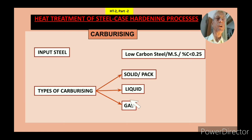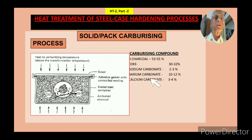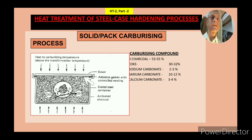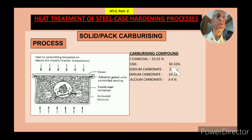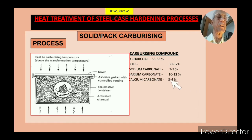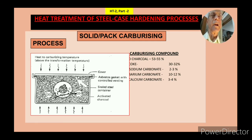In this video I will cover solid or packed carburizing. In this process, there is a steel box or cast iron box covered with a lid. In between, the carburizing compound of the following composition is packed: wood charcoal 52–55%, coke 30–32%, sodium carbonate 2–3%, barium carbonate 10–12%, and calcium carbonate 3–4%. Since all these are in solid form, this process is called solid carburizing, and since they are packed in a box, it is also known as packed carburizing.